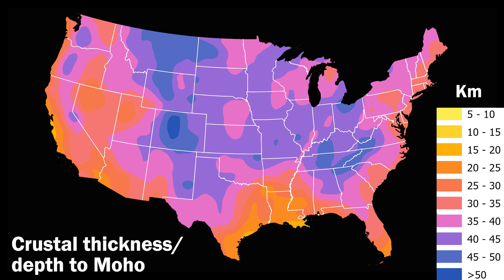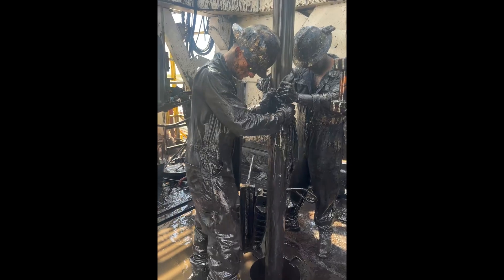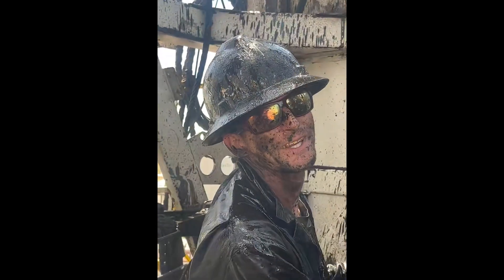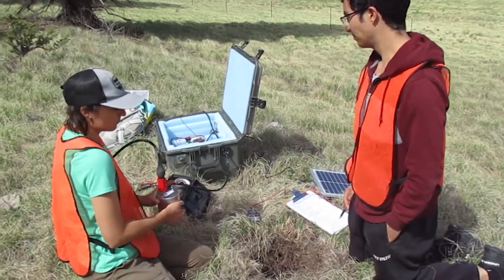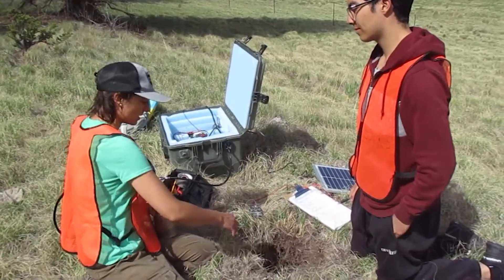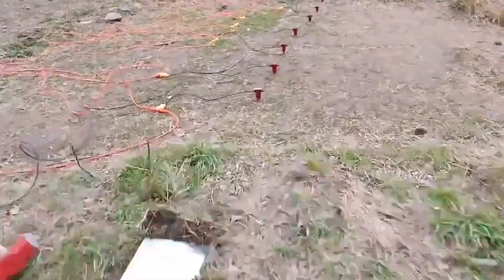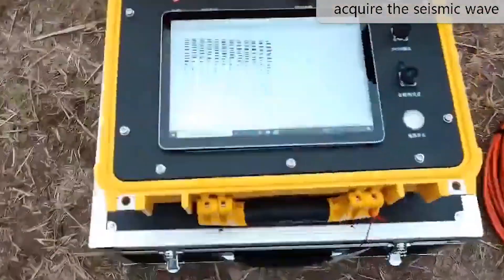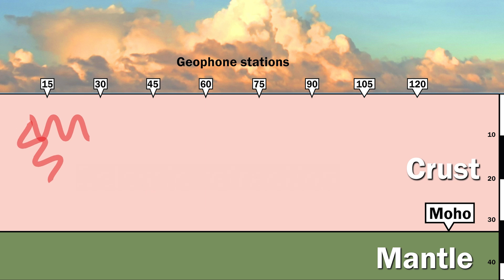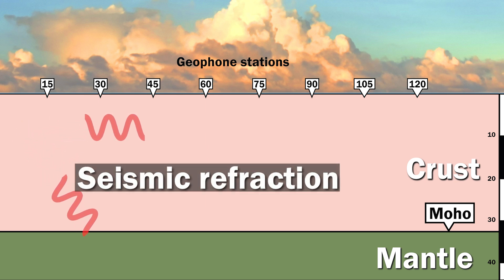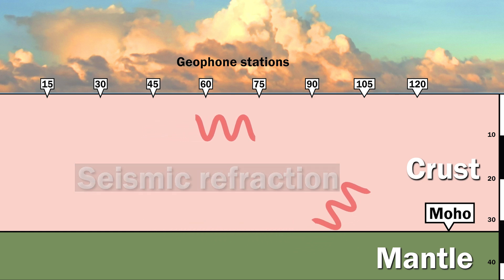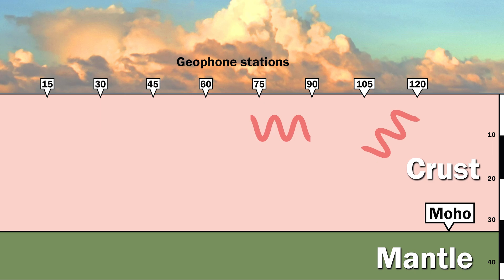The MOHO underlies all crust, including the continental crust of the U.S. Nobody has drilled all the way through any continental crust, so how do we know how thick it is? We use geophysics to examine what's inside the Earth. Geophysics is the branch of Earth sciences that applies the principles of physics to understand what lies beneath Earth's surface. A technique called seismic refraction is the best tool for determining the thickness and composition of U.S. continental crust, and it can also tell us something about the underlying mantle.